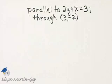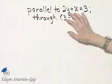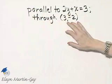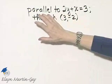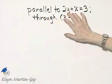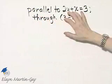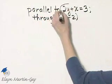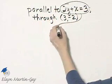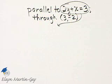Let's write an equation of the line that's parallel to this line through this point. Since we want a line parallel to this line, we need to find the slope of this line. How do we find the slope of this line? There are many ways, but we'll find the slope by solving this equation for y.